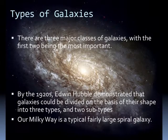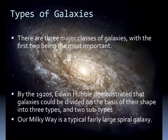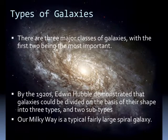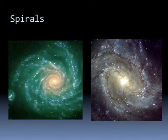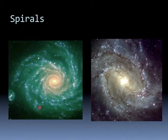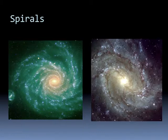There are three major classes of galaxies, with the first two being the most important. By the 1920s, Edwin Hubble demonstrated that galaxies could be divided on the basis of their shape into three types and two subtypes. Our Milky Way is a typical, fairly large spiral galaxy. Spiral galaxies have two or more arms winding out from the center. Notice one spiral galaxy has another little spiral in orbit around it. This one has many spiral arms, while this spiral galaxy only has two. We have to be able to classify between the different types of spiral galaxies.